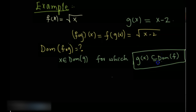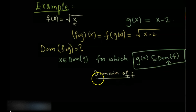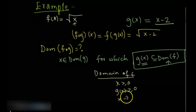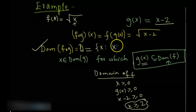First we find the domain of g, which is all real numbers (no restriction). The domain of f is x ≥ 0. So we need g(x) ≥ 0, meaning x − 2 ≥ 0, which gives x ≥ 2. Therefore, the domain of f∘g is all x ≥ 2.